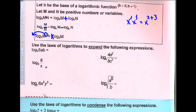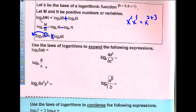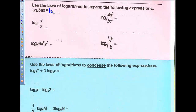So now let's use the laws of logarithms to expand the following expressions. Log base 2 of 5 times a times b uses the first property where we're multiplying. So I'm going to split this up into three terms with log base 2, putting an addition sign between each one: log base 2 of 5 plus log base 2 of a plus log base 2 of b.